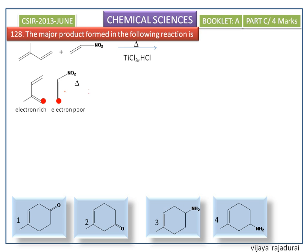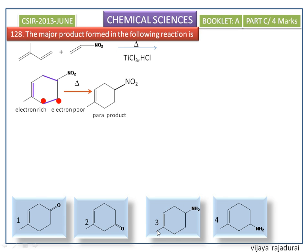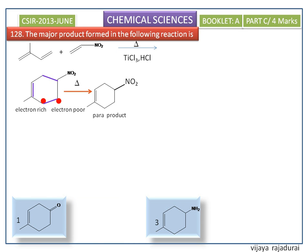Now it undergoes a [4+2] Diels-Alder reaction, and heating gives a six-membered unsaturated para-substituted product. In the given options, only the first and third options are para products. The second and fourth options are meta products, so the second and fourth options are not the correct answer.